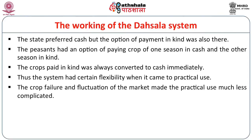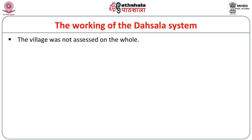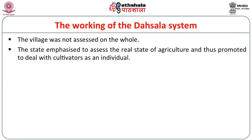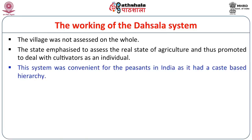The official instructions remained very rigid. The crop failure and fluctuation of the market made the practical use much less complicated during this period. The village was not assessed on the whole. The state emphasized assessing the real state of agriculture and thus promoted dealing with cultivators as individuals. This system was convenient for the peasants in India because of the caste-based hierarchy which always kept the peasants at a lower rung of society.